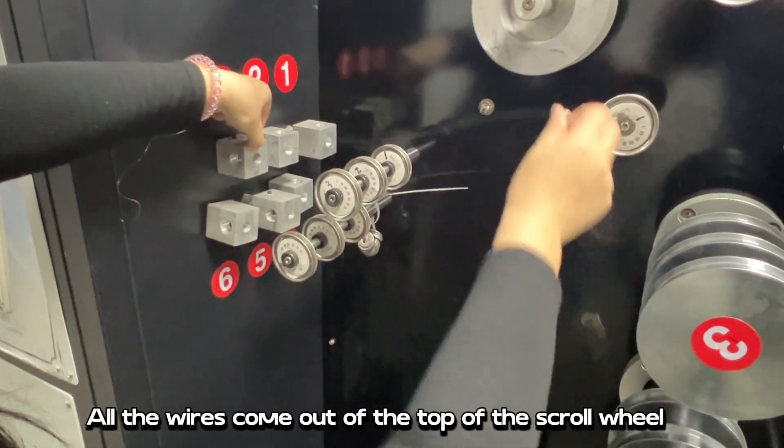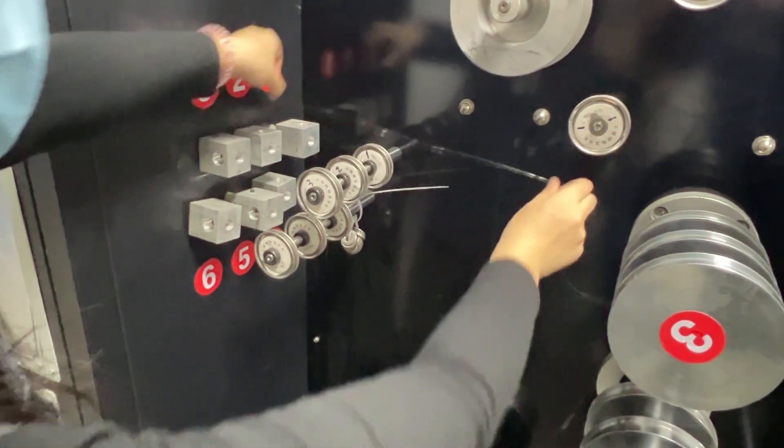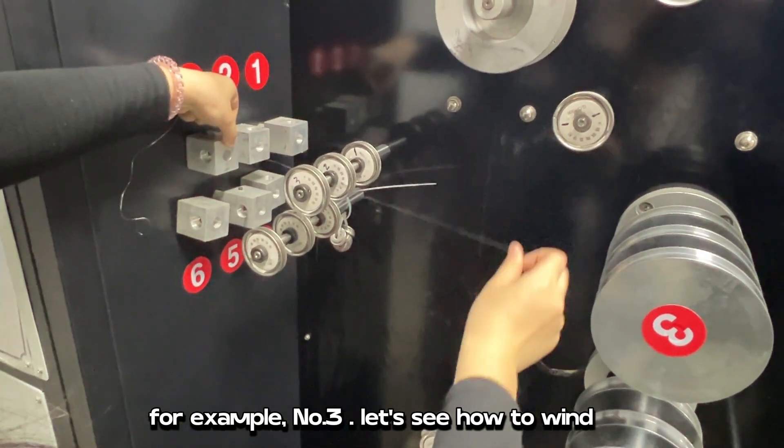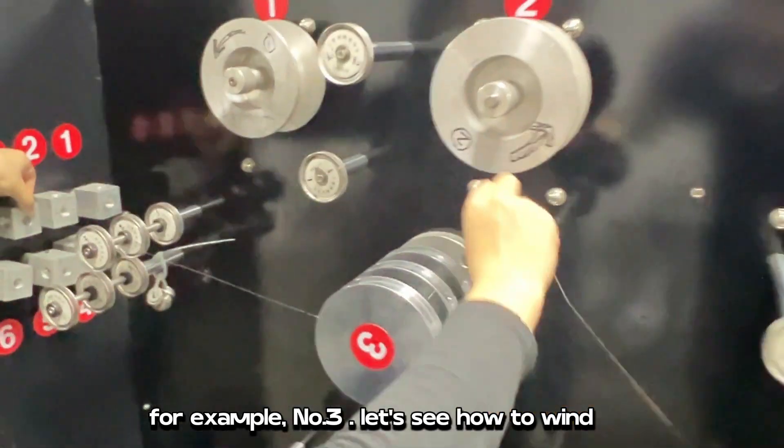All the wires come out of the top of the scroll wheel. For example, number 3. Let's see how to wind.